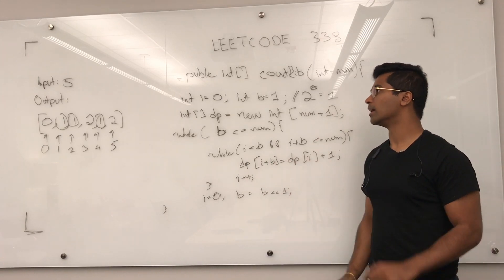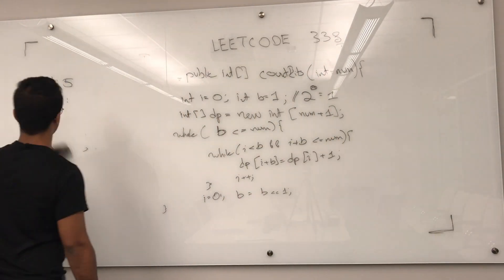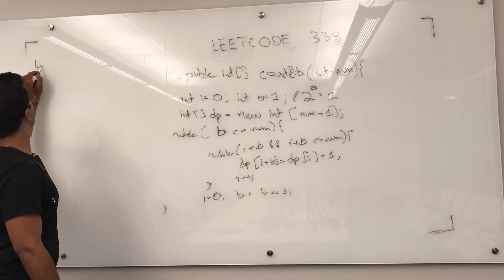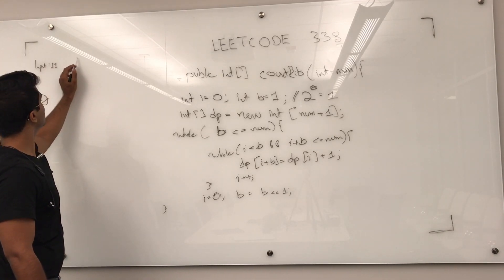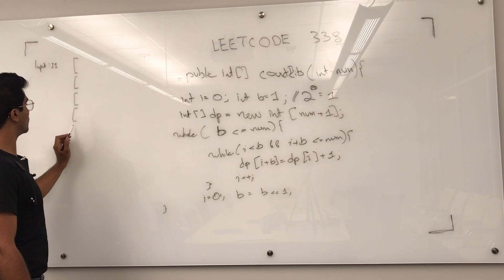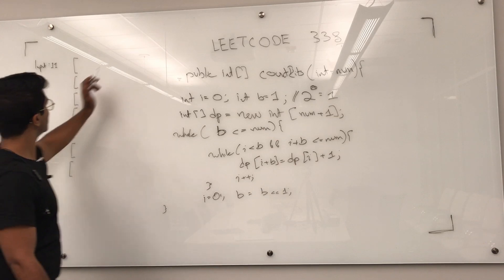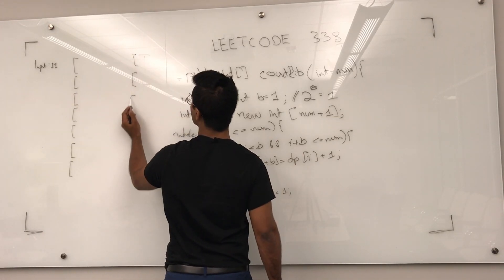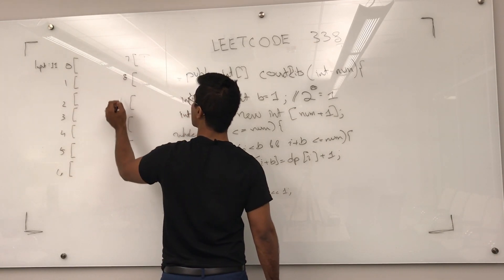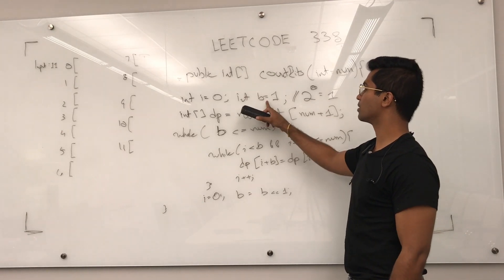Now let's look at a bigger example. Let's say the input was 11. The array will have indices 0 through 11, and we want to return the count of set bits for each index. So first, i is going to be 0 and b is going to be 1.